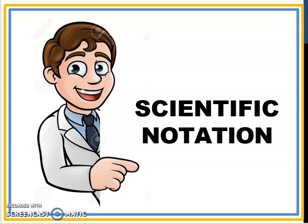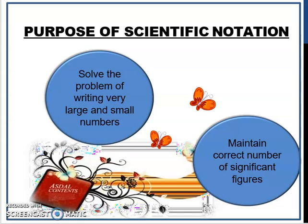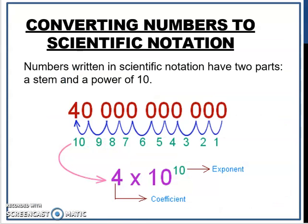Now we proceed to scientific notation. There are two purposes of scientific notation: the first is to solve the problem of writing very large or very small numbers, and the second is to maintain the correct number of significant figures. Numbers written in scientific notation have two parts: a coefficient and a power of 10.